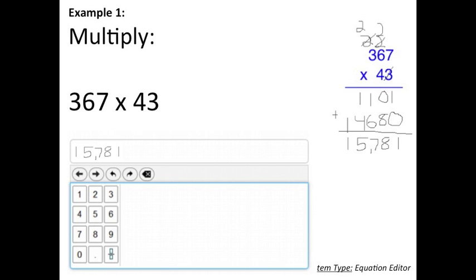So I've done 367 times 3 to get 1,101, and then I crossed out the 3 in the ones place and add a 0 down below to then do 367 times 40, and I got 14,680. When I added those two products together, I got 15,781.